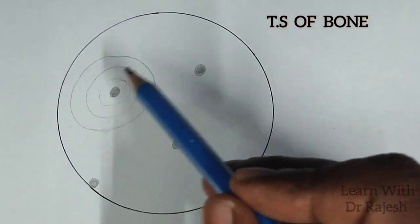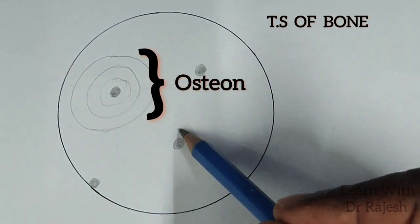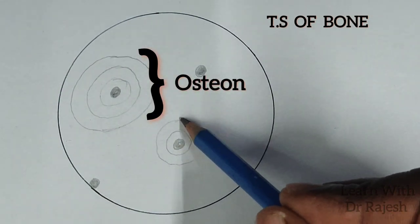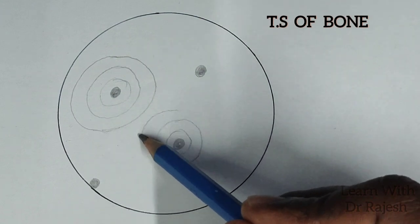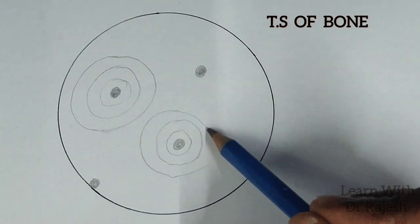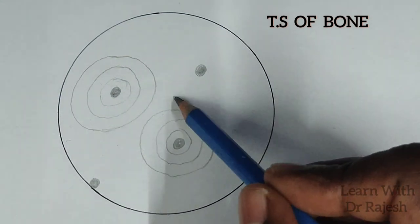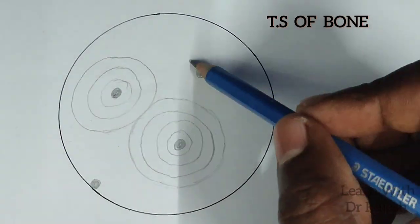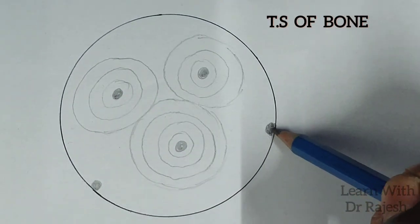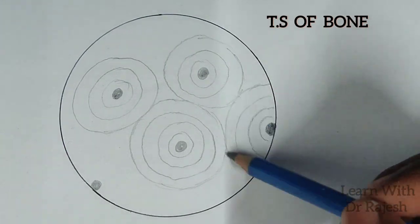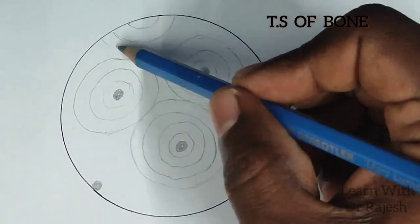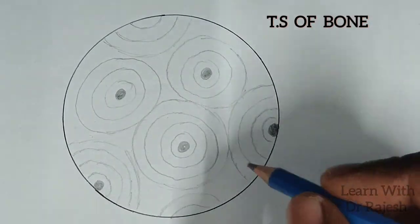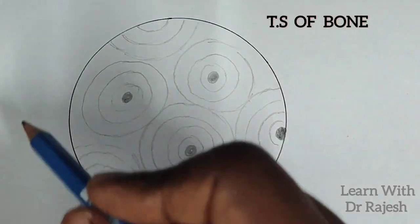What we are drawing now is an osteon — we have completed one osteon. This is the next osteon. Each osteon has the Haversian canal at the center, surrounded by concentric lamellae, with osteocytes between the lamellae. Like that, we can complete the entire slide with osteons.